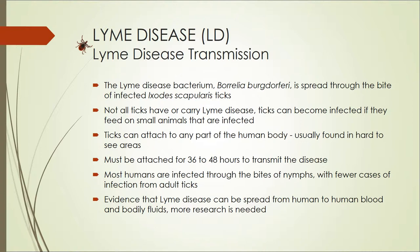Most humans are infected by the bite of nymphs. Nymphs are immature ticks and are small, often less than 2 millimeters, and are very hard to see. Adult ticks can transmit the disease too, but are much easier to detect. There is some evidence that Lyme disease may be spread from human to human through blood and bodily fluids, but there is still more to be researched.